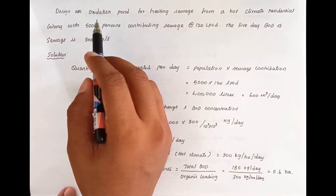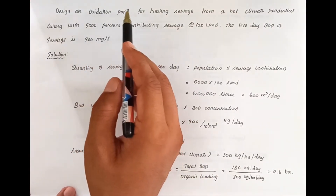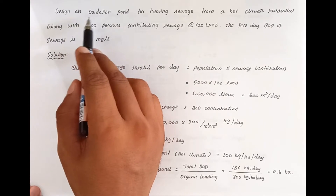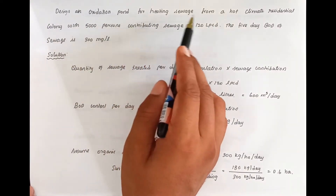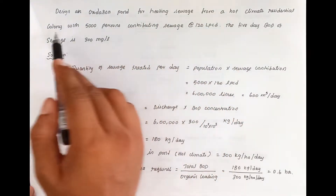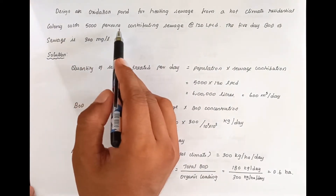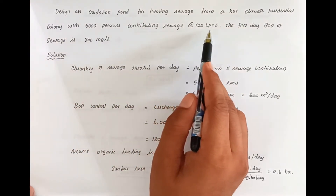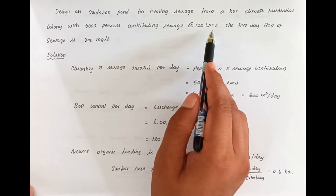Hello friends, today we are going to see the design of an oxidation pond. The problem is to design an oxidation pond for treating sewage from a hot climate residential colony with 5000 persons contributing sewage at 120 liters per capita per day.